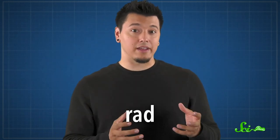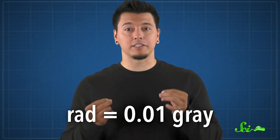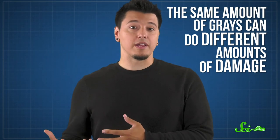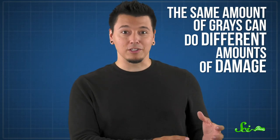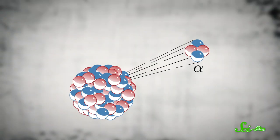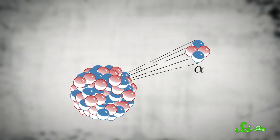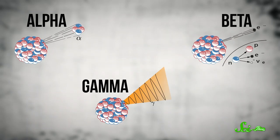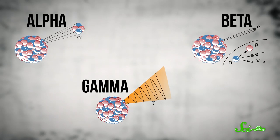Some people still use the rad, a historical unit now equivalent to 0.01 gray. But whether you're talking rads or grays, there's an additional complication: some types of ionizing radiation do more damage to the body than others. So the same amount of grays can do different amounts of damage, depending on the type of ionizing radiation. There are lots of types of ionizing radiation, but the three main ones are called alpha, beta, and gamma — each referring to a different type of particle ejected during nuclear decay.